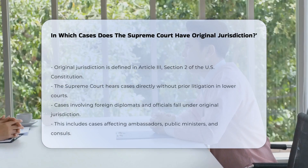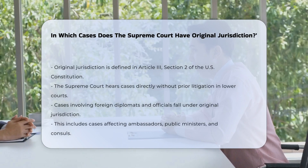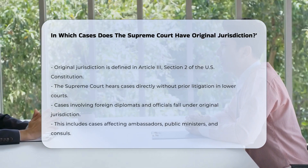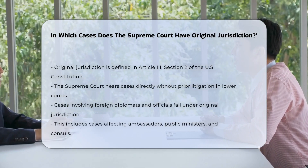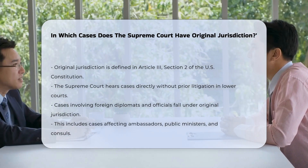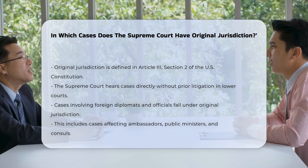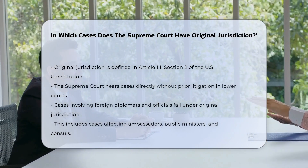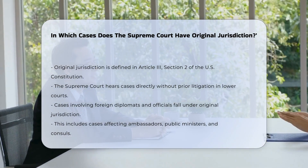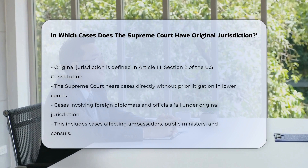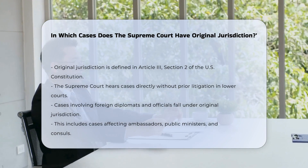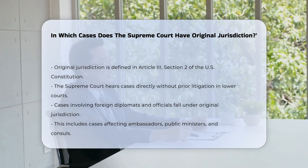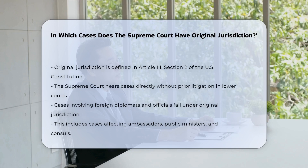The concept of original jurisdiction is rooted in the U.S. Constitution, specifically in Article 3, Section 2. This section outlines the types of cases that the Supreme Court has the authority to hear directly, without the need for prior litigation in lower courts.